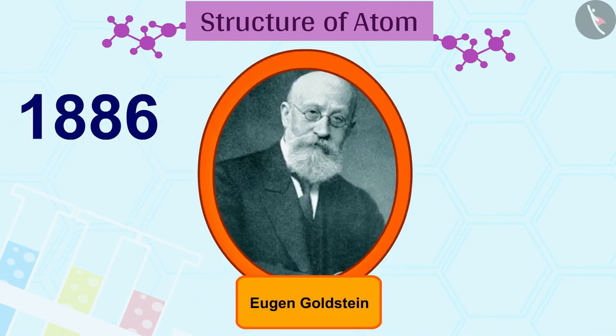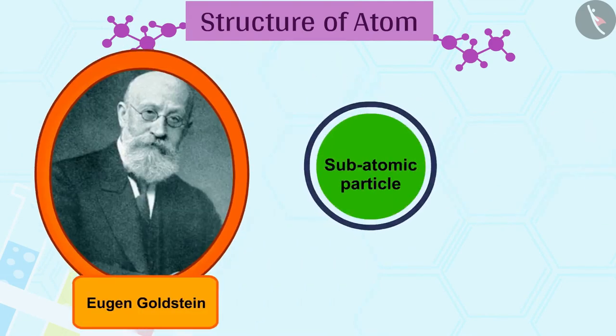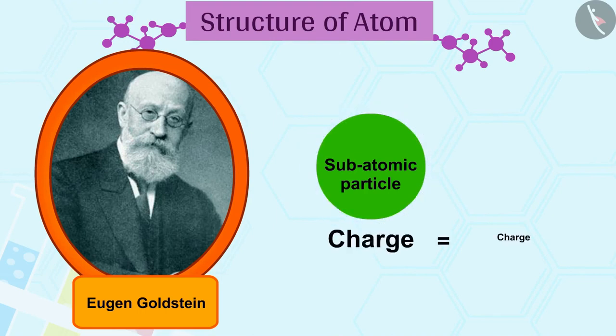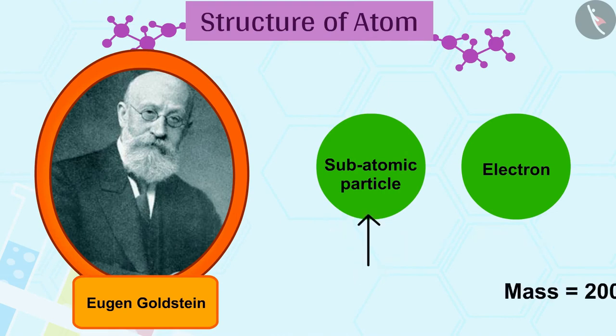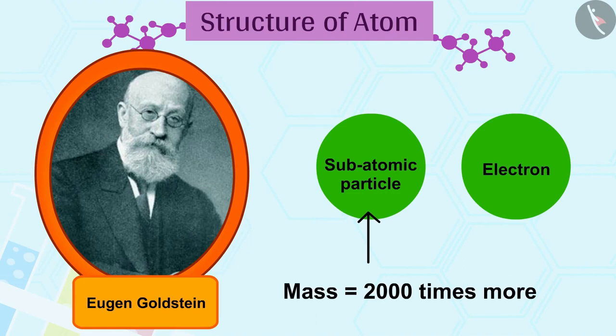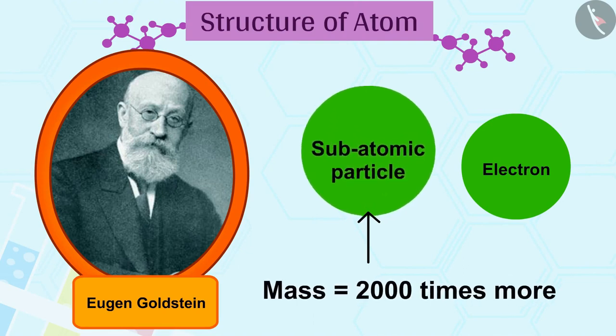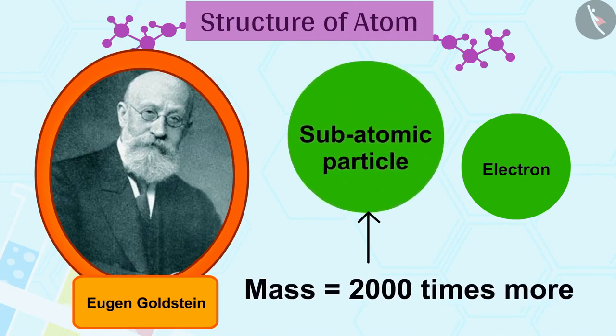In 1886, E. Goldstein discovered another subatomic particle whose charge was equal to but opposite to the charge of the electron and the mass was approximately 2,000 times more than the electron. These particles were named proton.